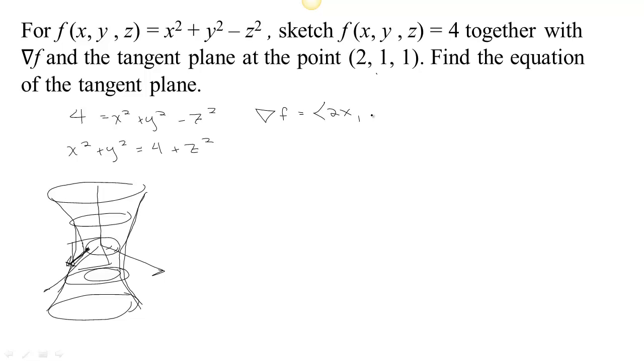The partial with respect to x is 2x. The partial with respect to y is 2y, and the partial with respect to z is minus 2z. So at our particular location (2, 1, 1), then our gradient is (4, 2, -2).